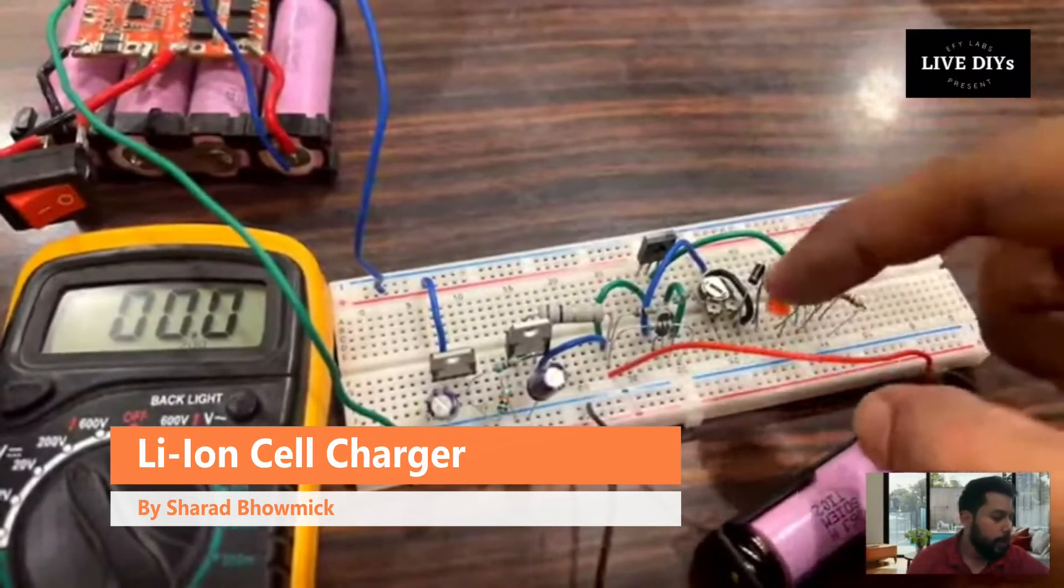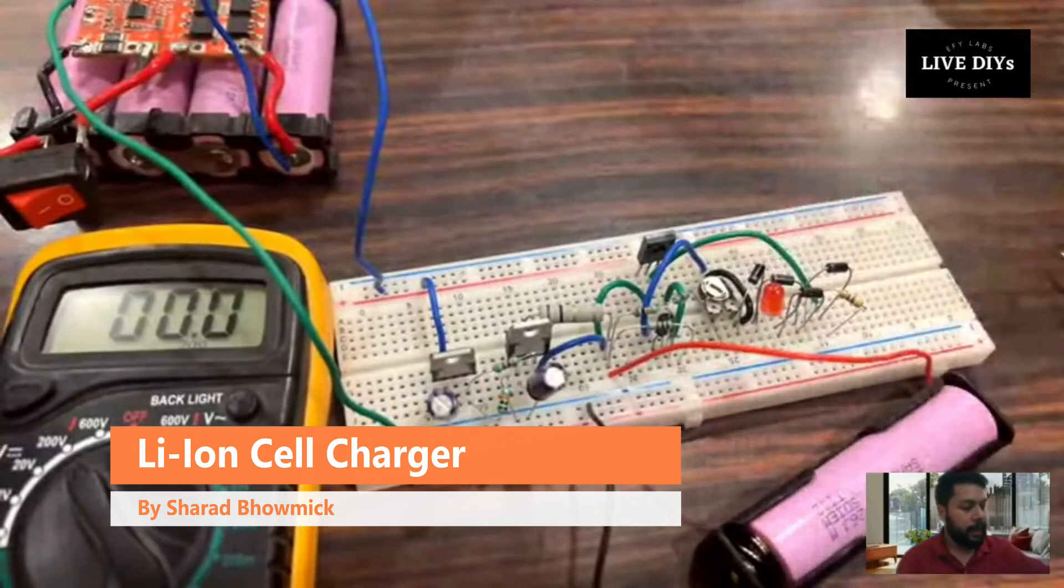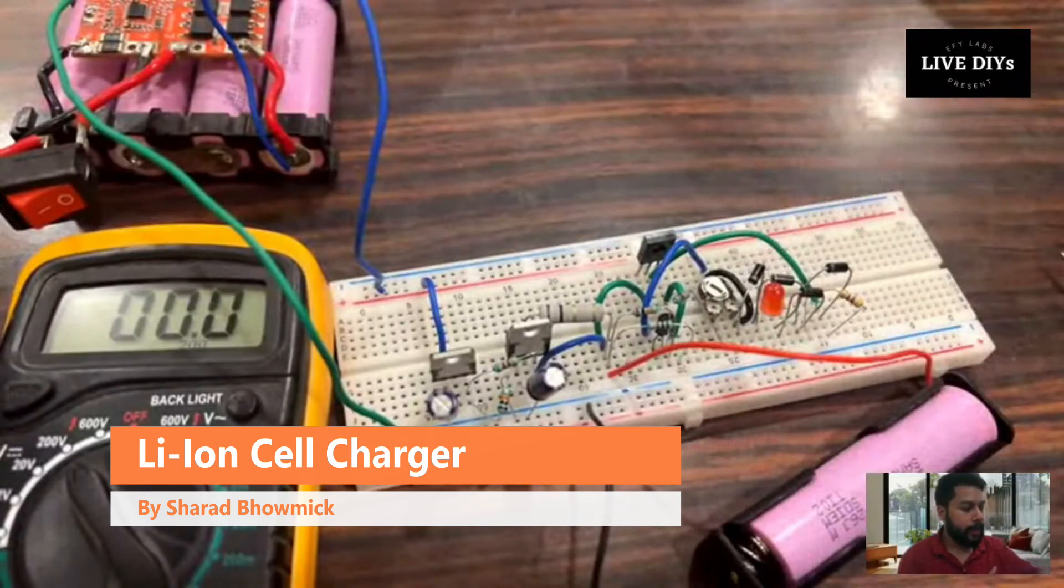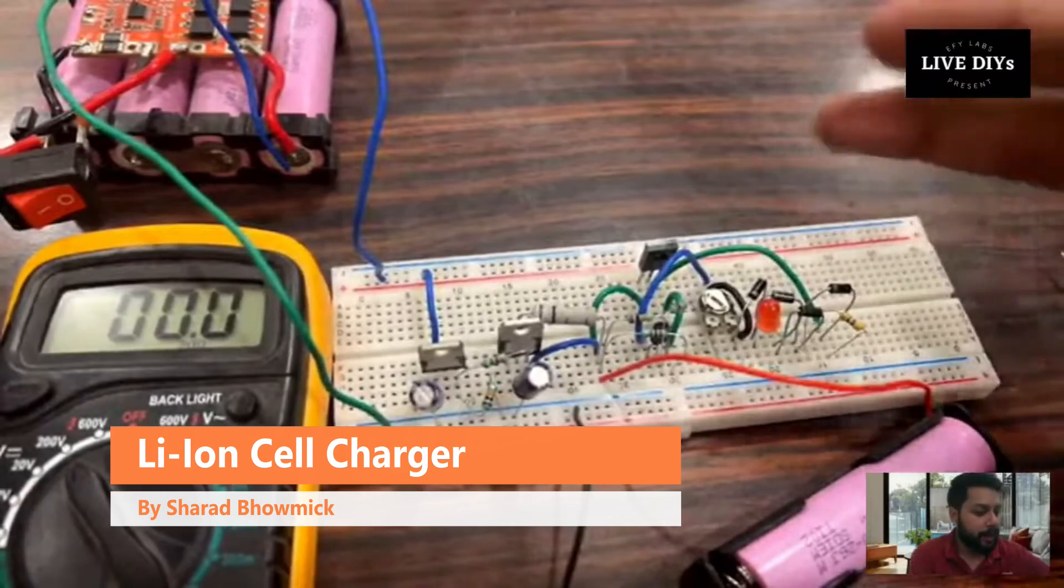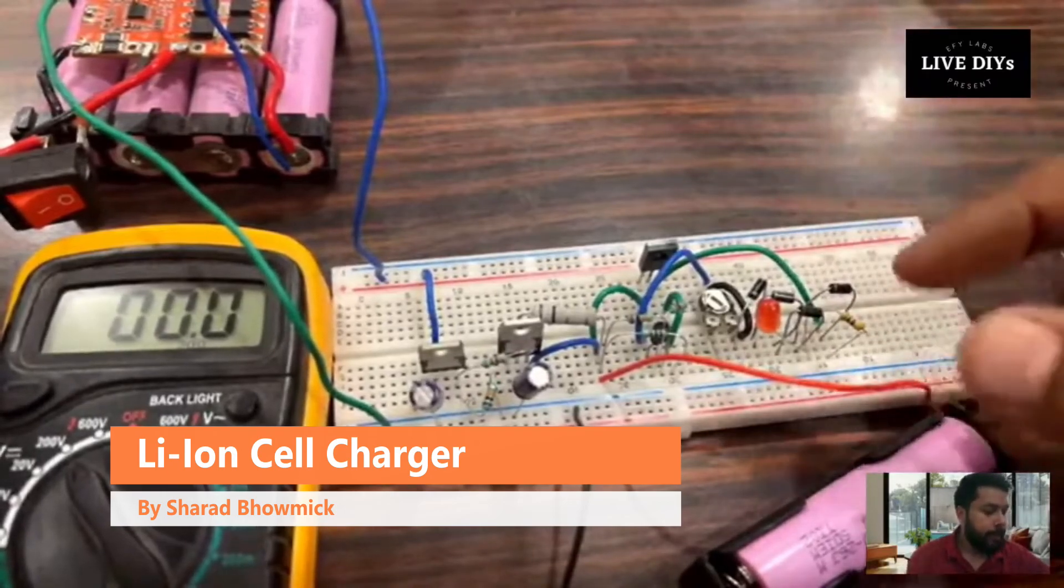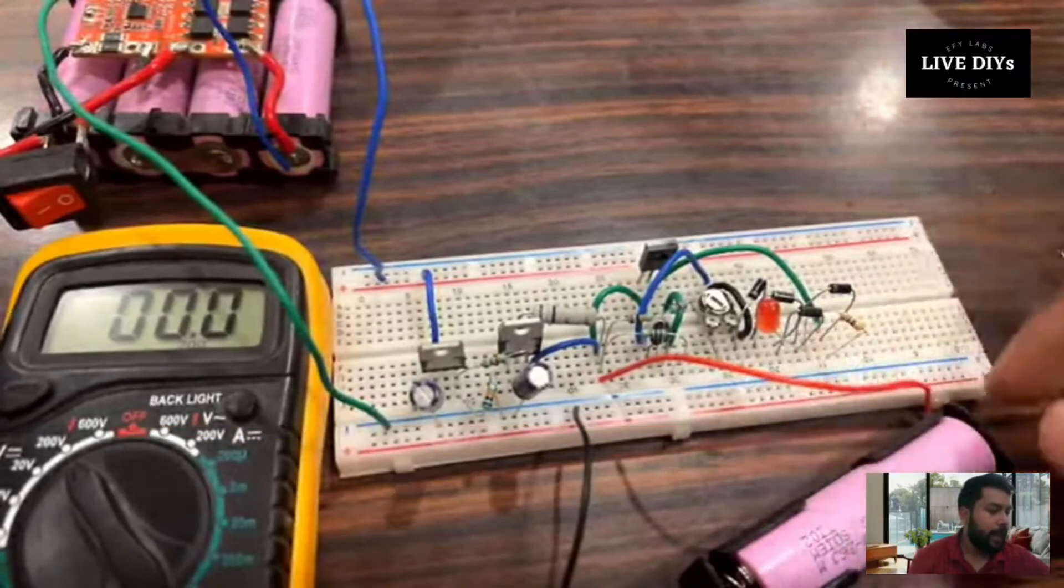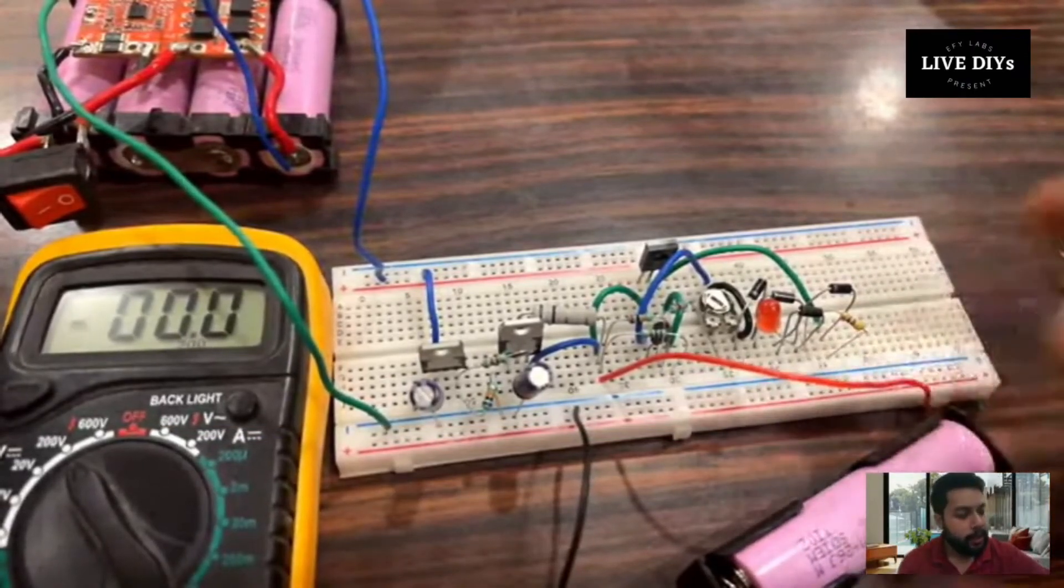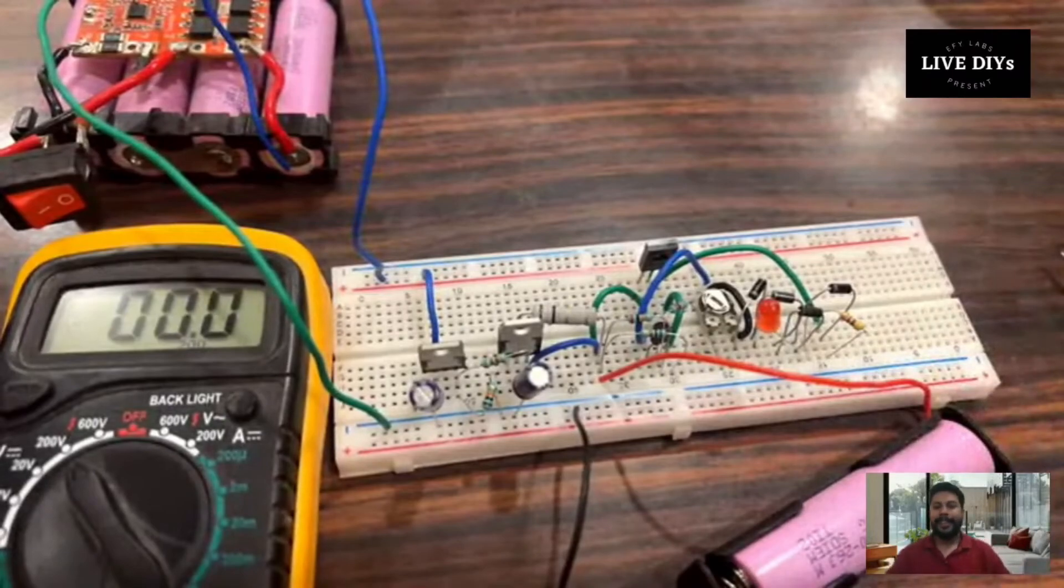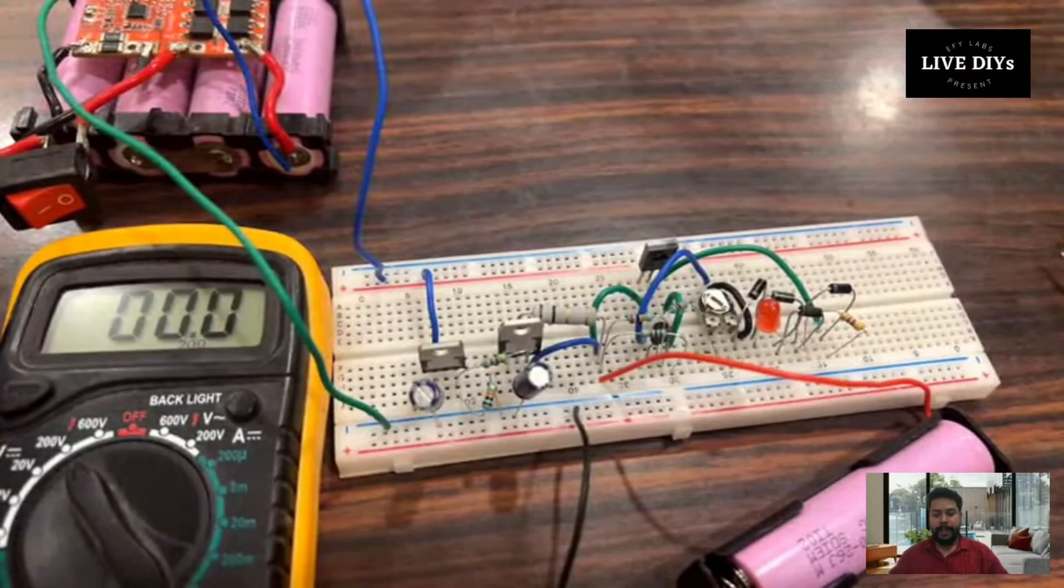The first thing we need to do is set it to 4.2 volts. I have already set it to 4.2 volts. When the battery charges completely, the LED will start glowing. I don't have the RPS with me to show you how I can set it because of space constraints. But that's how basically the circuit works. The cell will take a long time to charge, but trust me it does work.